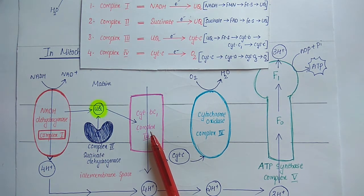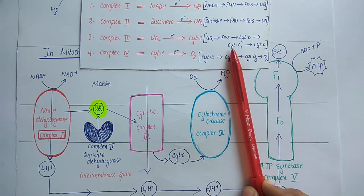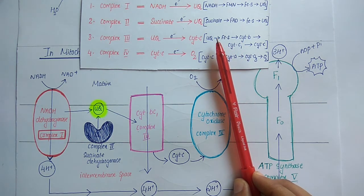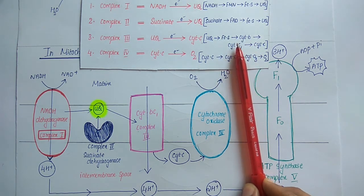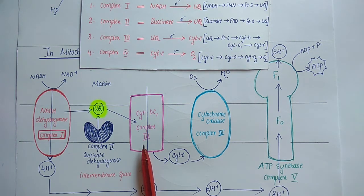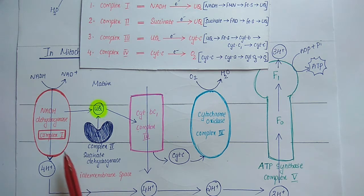Complex 3 is otherwise called the cytochrome BC1 complex. It consists of FES, cytochrome B, and cytochrome C1. Complex 3 transfers electrons from ubiquinone to cytochrome C through FES, cytochrome B, and cytochrome C1. For every pair of electrons transferred from ubiquinone to cytochrome C, four protons are pumped from the matrix to the intermembrane space. So both complex 1 and complex 3 help pump protons into the intermembrane space.